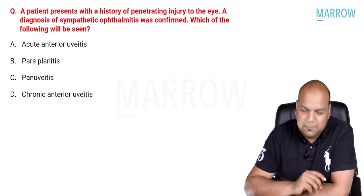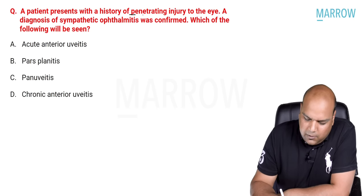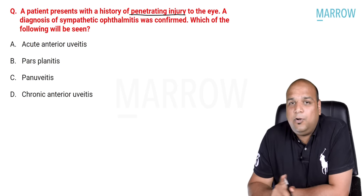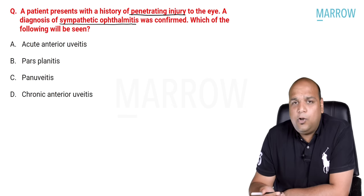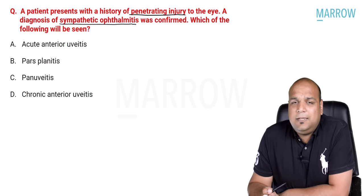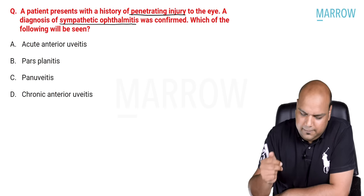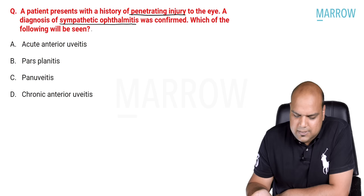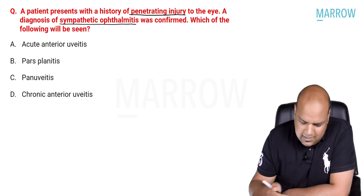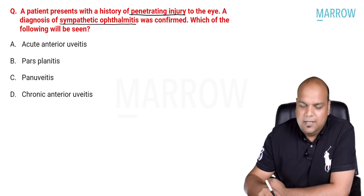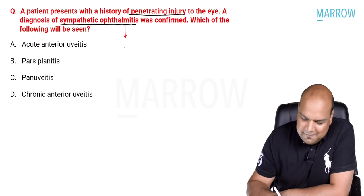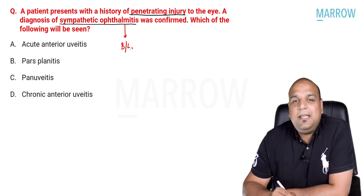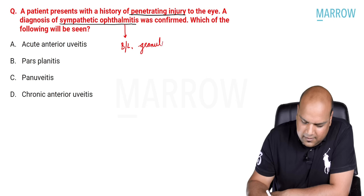Moving on to the second question asked in NEET PG: a patient presents with a history of penetrating injury, and a diagnosis of sympathetic ophthalmitis was confirmed. All of us should remember that sympathetic ophthalmitis occurs due to penetrating trauma. Which of the following will be seen? It is asking directly what sympathetic ophthalmitis is. Sympathetic ophthalmitis was studied under the topic of uvea, under pan-uveitis.